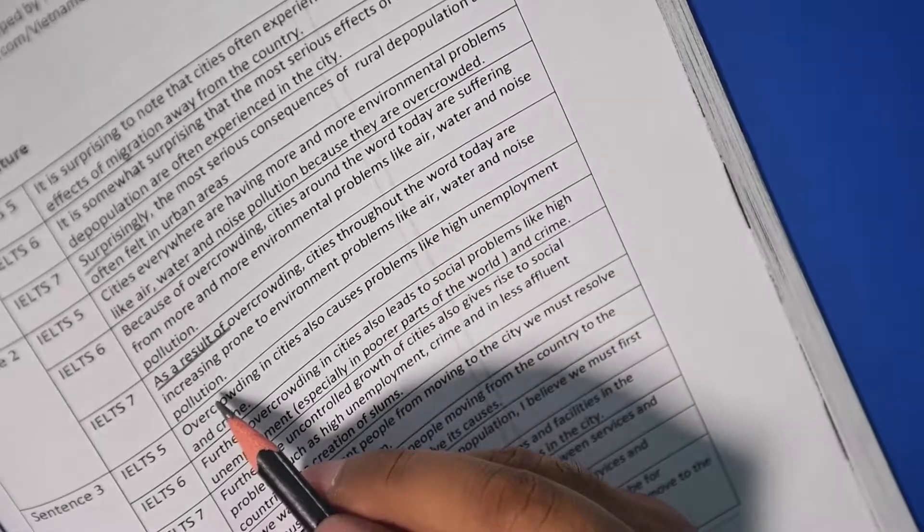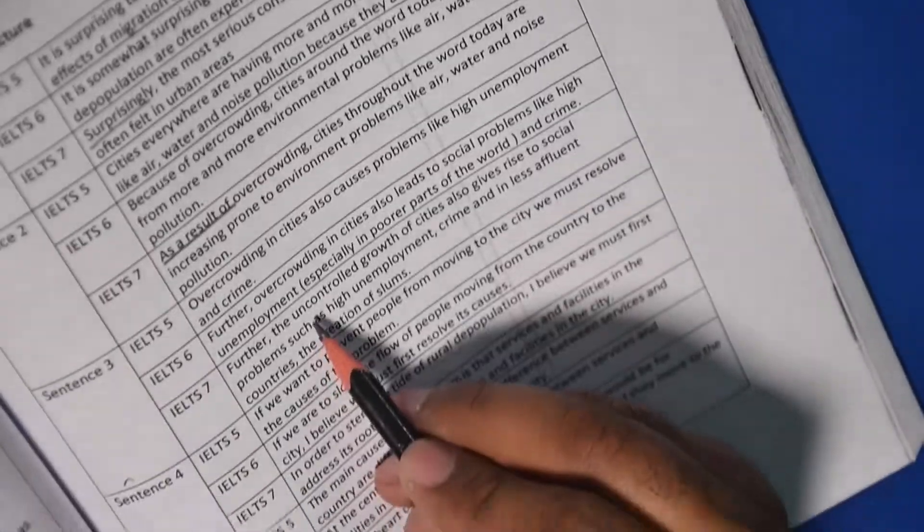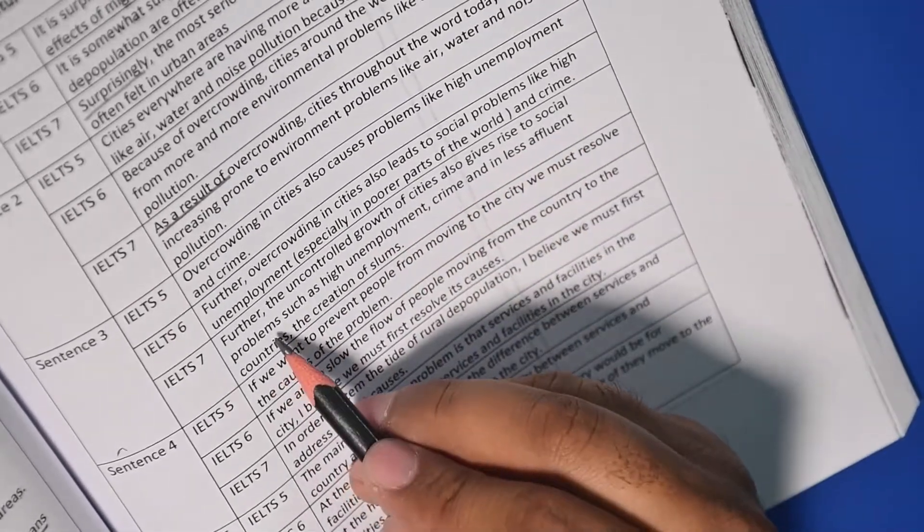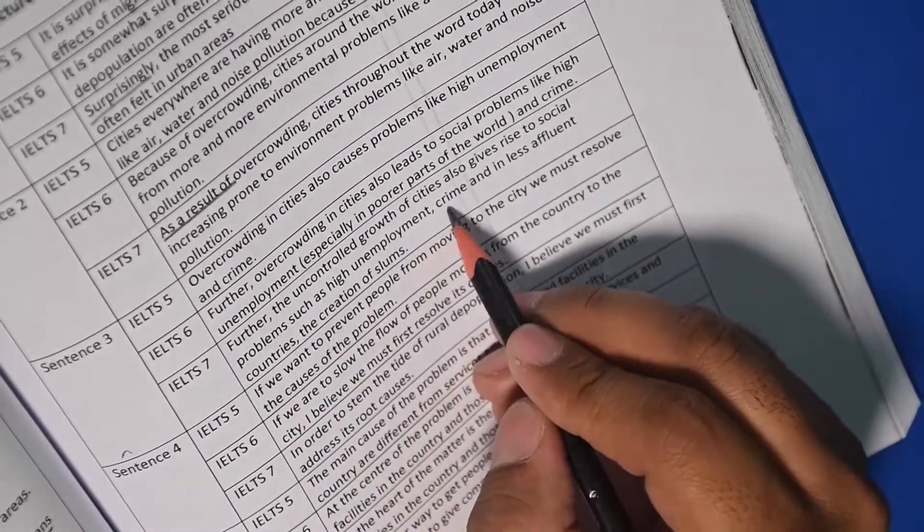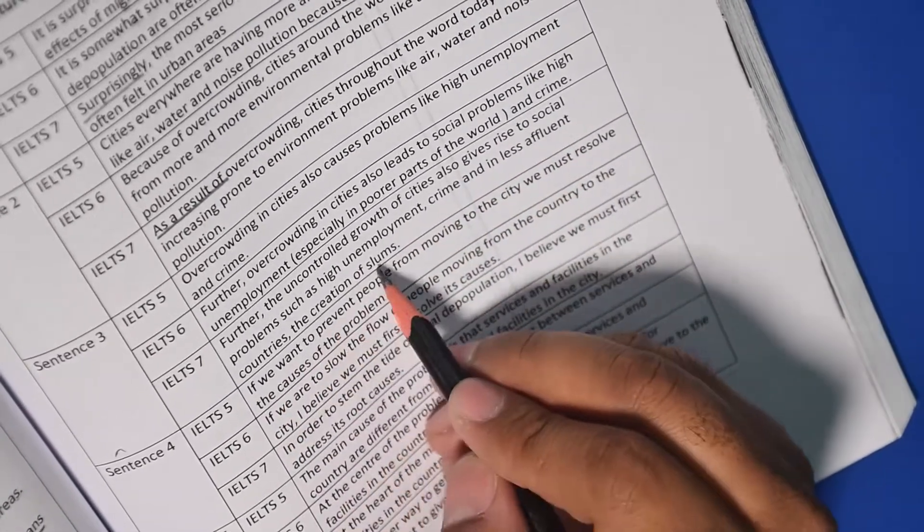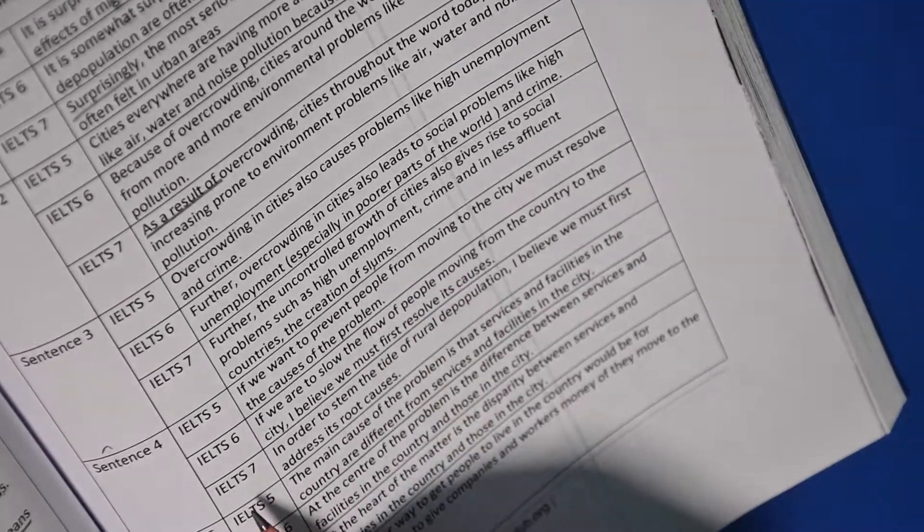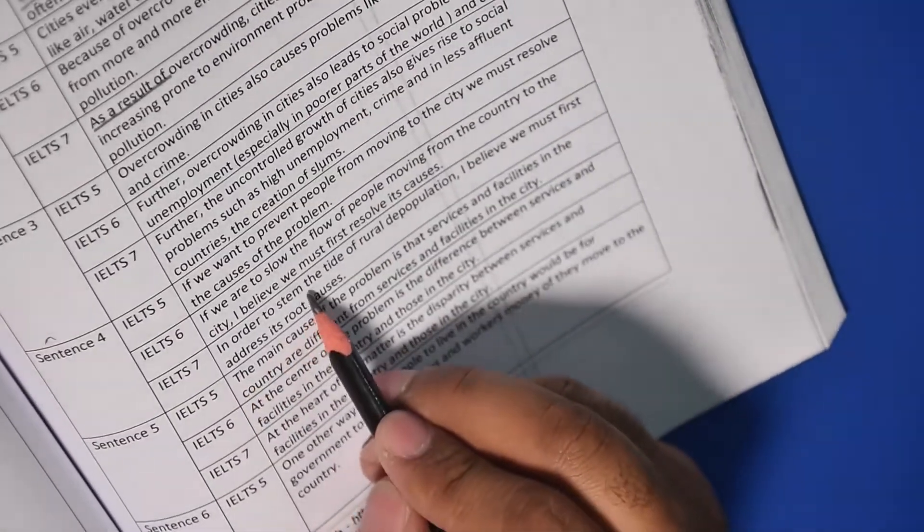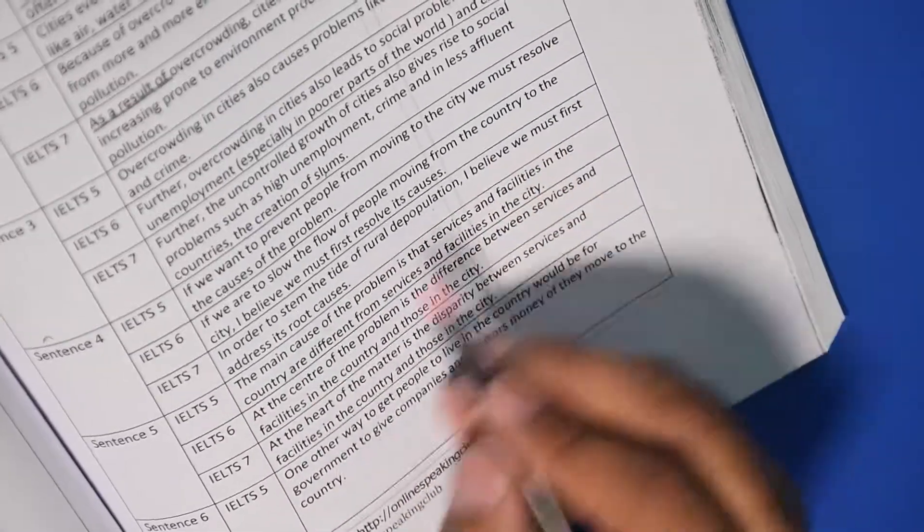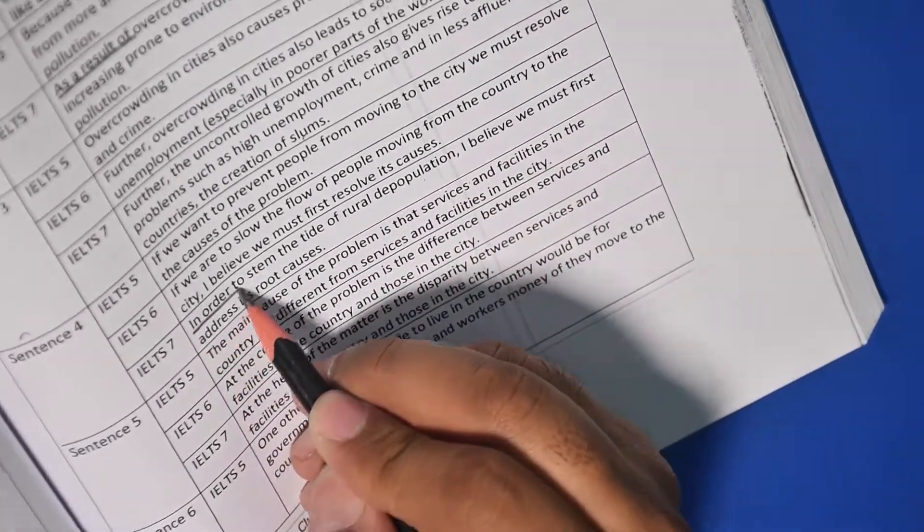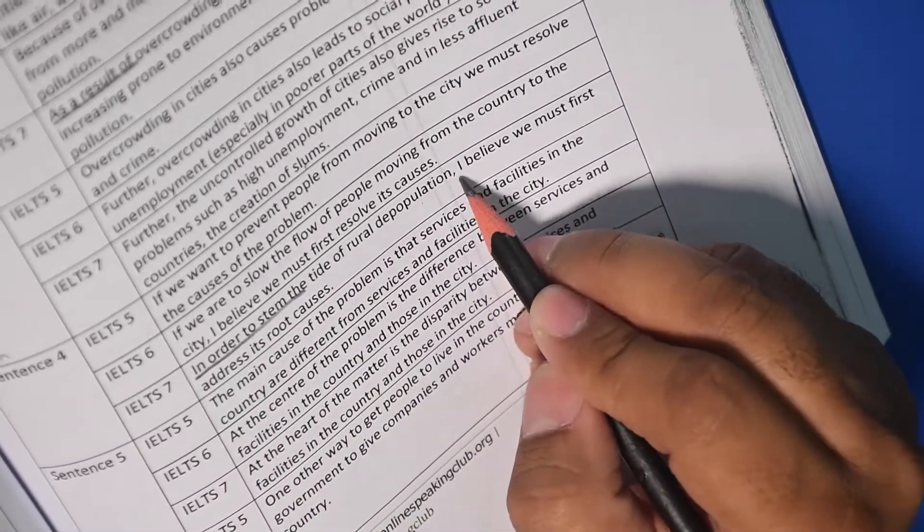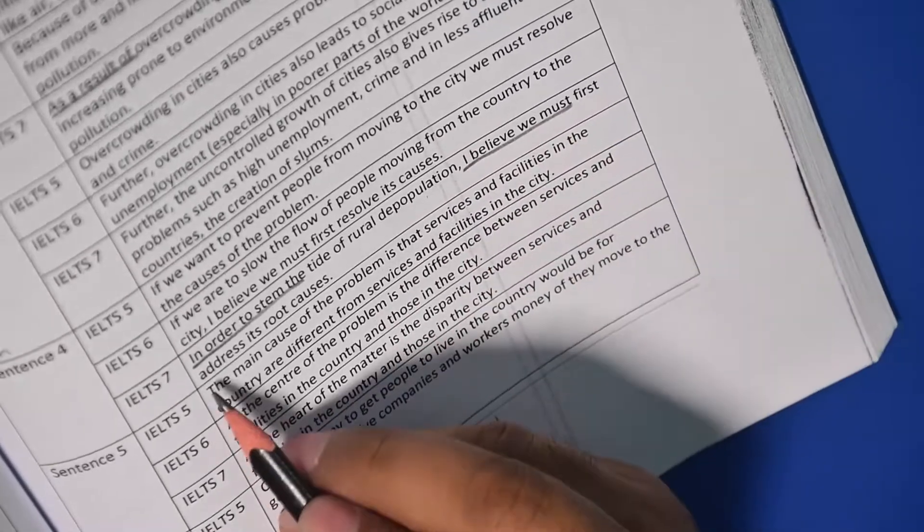Further, the uncontrolled growth of cities also gives rise to social problems such as high unemployment, crime, and in less affluent countries the creation of slums. Next, for Band 7, in order to stem the tide of rural depopulation, I believe we must. So in order to stem, you can use this and then the problem of the topic. I believe we must, you can copy this as well.